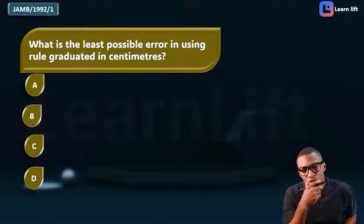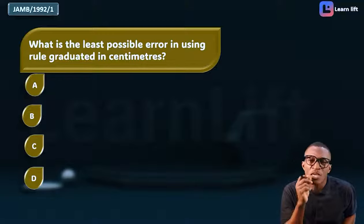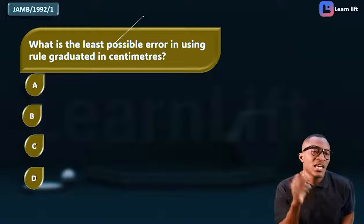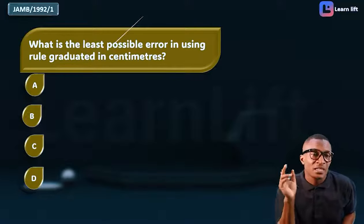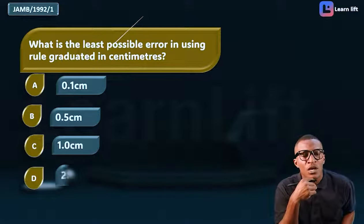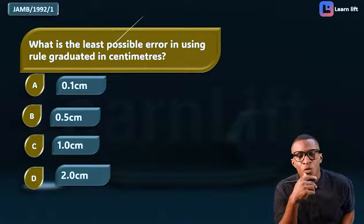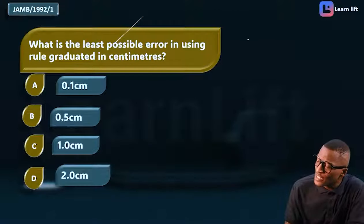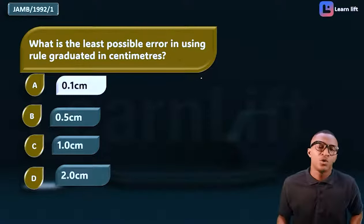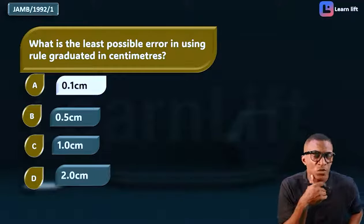Let's take a past question. JAMB 1992, question 1: What is the least possible error when using a rule graduated in centimeters? Option A: 0.1, B: 0.5, C: 1.0, D: 2.0. We said that in centimeter, the least possible error is 1 divided by 10, which equals 0.1 centimeter. In millimeter it is 1 millimeter. So the answer is option A: 0.1 centimeter.